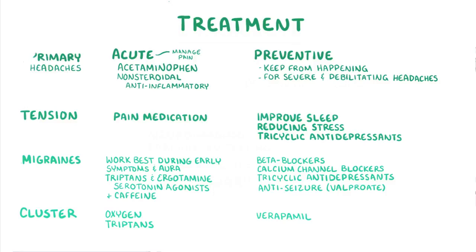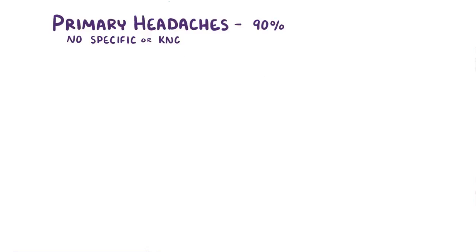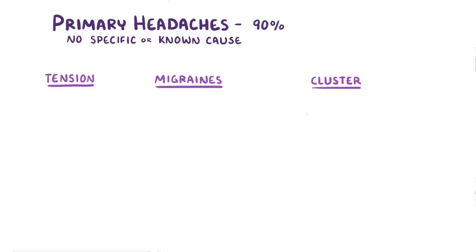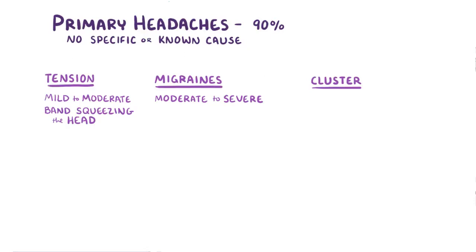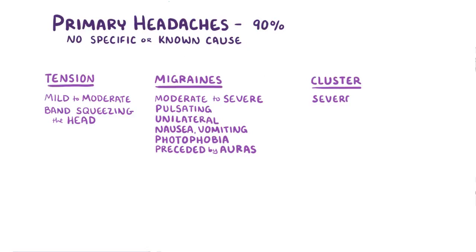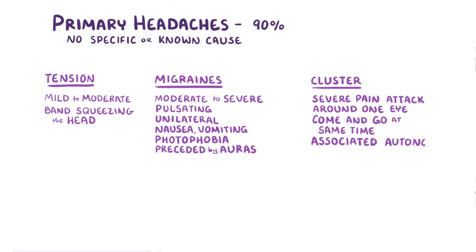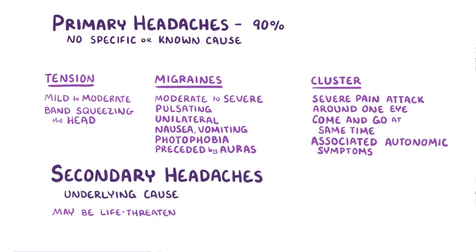As a quick recap: primary headaches account for 90% of all headaches and don't have a specific or known cause. They include tension headaches, migraines, and cluster headaches. Tension headaches are mild to moderate pain that feel like a band squeezing the head. Migraines are moderate to severe pulsating pain attacks, mostly unilateral, with associated symptoms like nausea, vomiting, and photophobia, sometimes preceded by auras. Cluster headaches are severe pain attacks around one eye that come and go at the same time every day, with associated autonomic symptoms. Secondary headaches have an underlying cause, which might be life-threatening and must be treated in time.